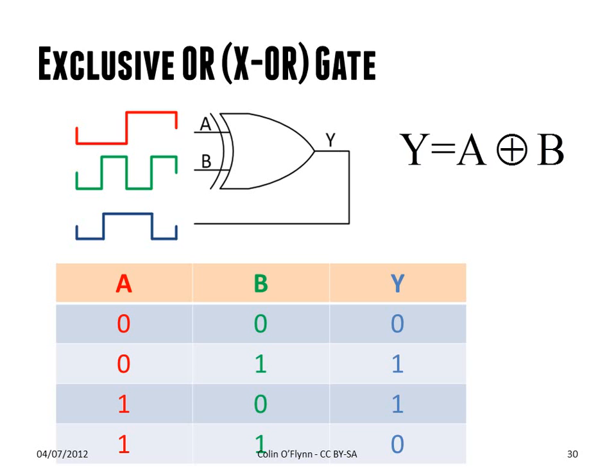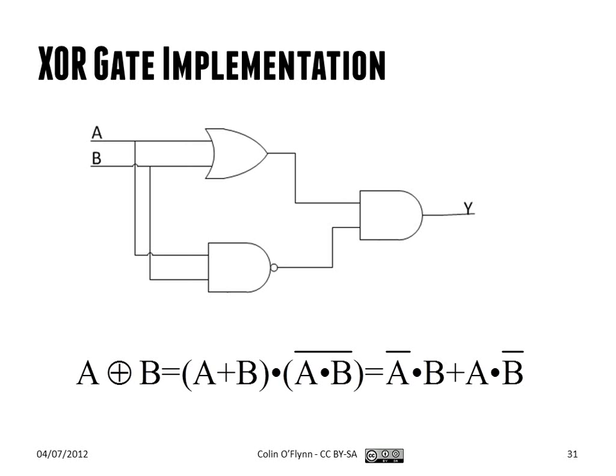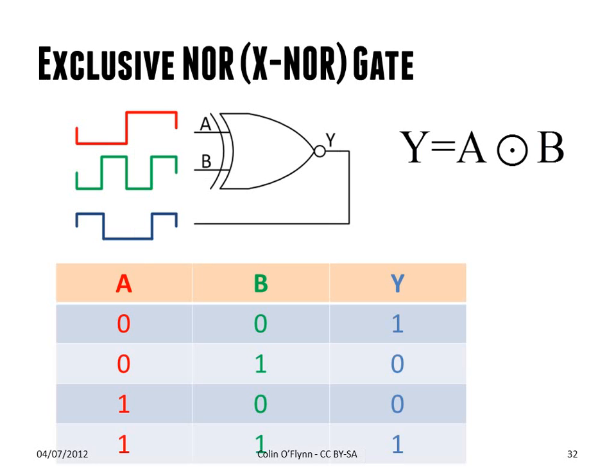The final basic gate we consider is the exclusive-OR or XOR gate, which we'll call a difference gate. We'll use it in binary adders and subtractors. The output is one when only one of the inputs is one, but not both — it provides a high level when the outputs differ, but is low if they're the same. If we add an inverter on the output, we get the exclusive-NOR or XNOR gate, which provides the opposite: the output is high when the inputs are the same, and low when they differ.